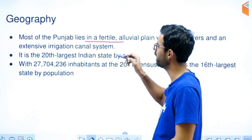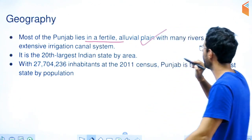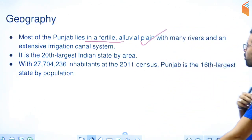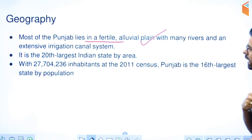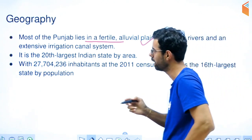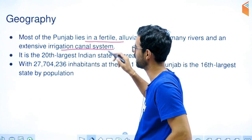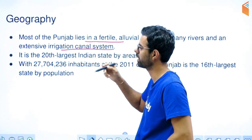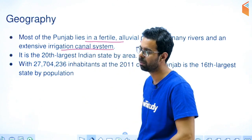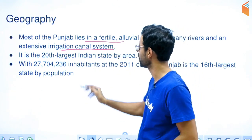The region has a lot of fertile alluvial plain. There is a well-developed irrigation canal system, which is why agriculture in Punjab is very strong. Punjab and Sutlej-Yamuna areas are agriculturally very significant.